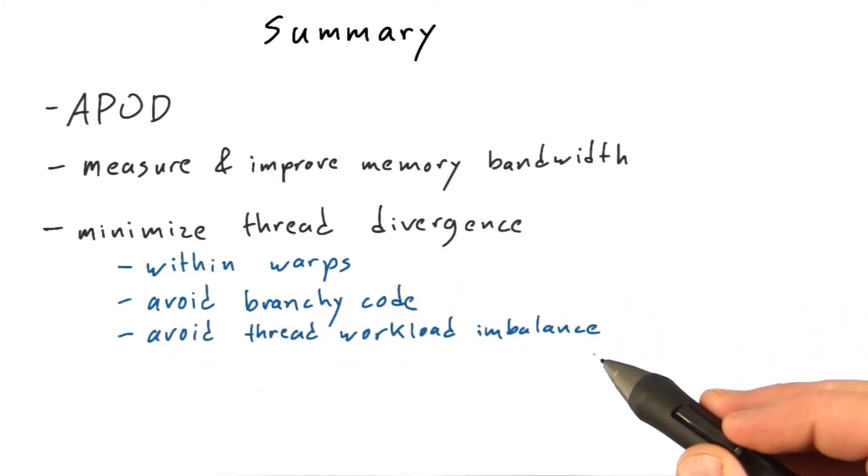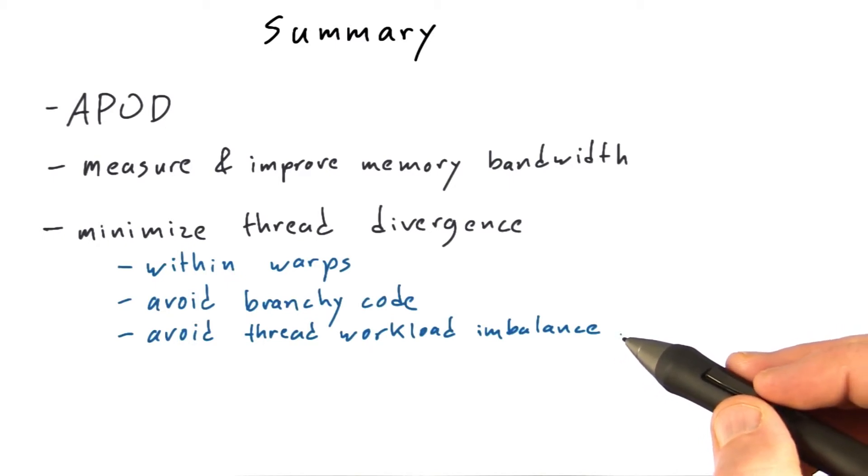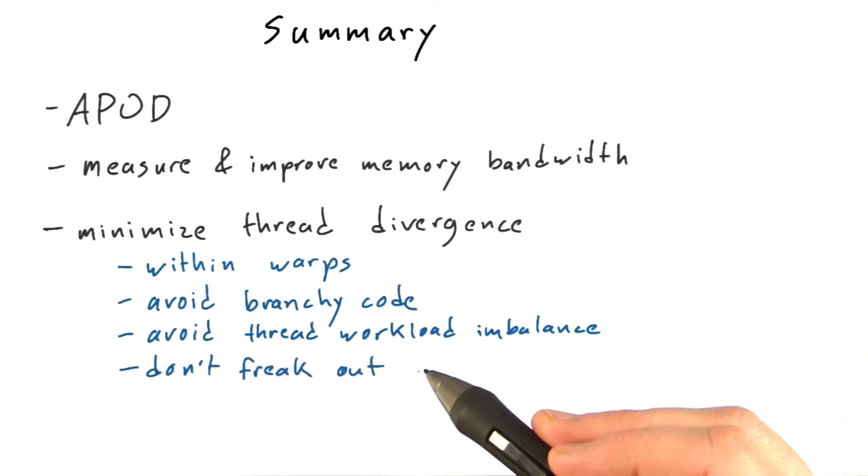And you should generally be thinking about avoiding thread workload imbalance. In other words, if you have loops in your kernels that might execute a very different number of times between threads, then that one thread that's taking much longer than the average thread can end up holding the rest of the threads hostage. All that said, don't let a little bit of thread divergence freak you out.